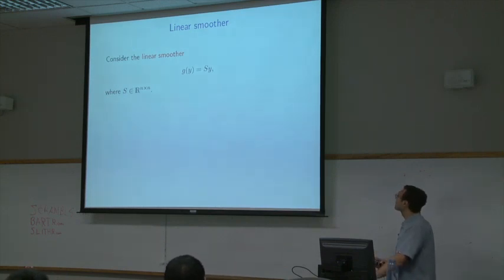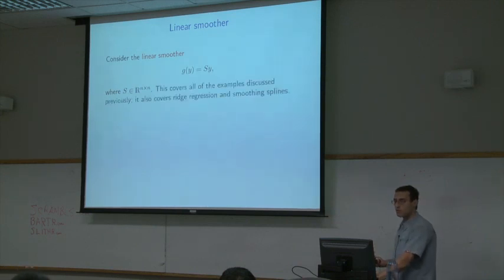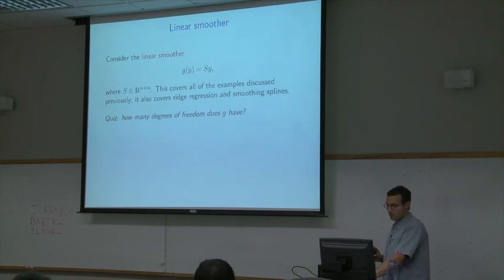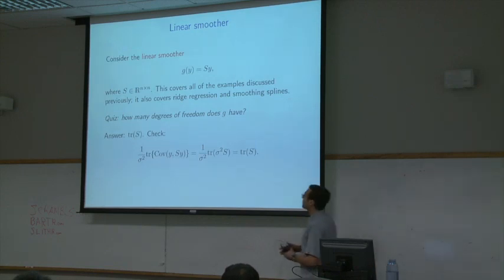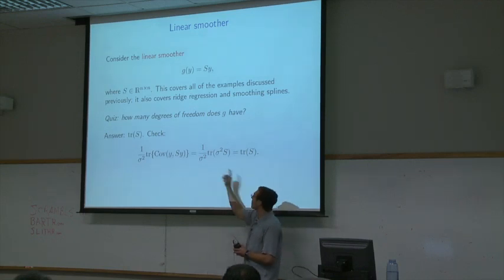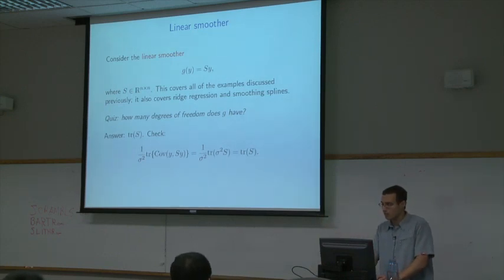All these examples — average, identity, linear regression, regression splines — are examples of linear smoothers where g equals S times y for some matrix S. For linear smoothers, the degrees of freedom is simply the trace of the smoother matrix S. The check is straightforward: the covariance of y with S*y gives sigma squared times S, sigma squares cancel, and what comes out is the trace of S.